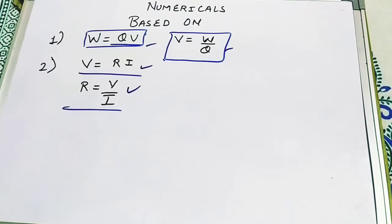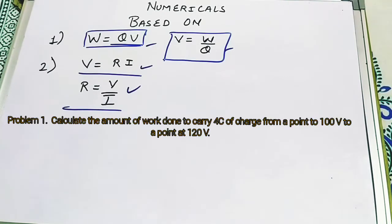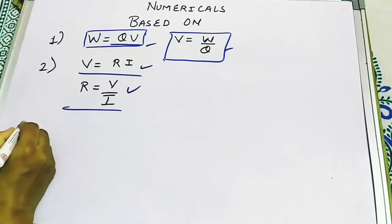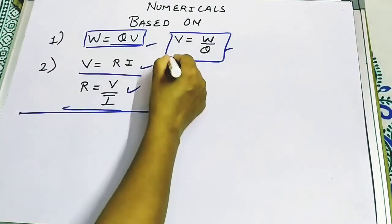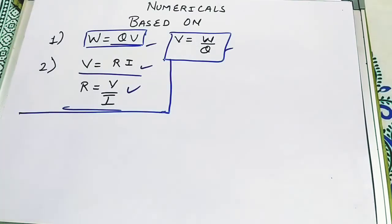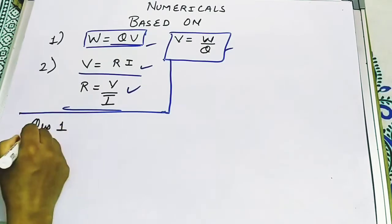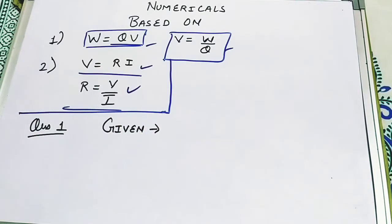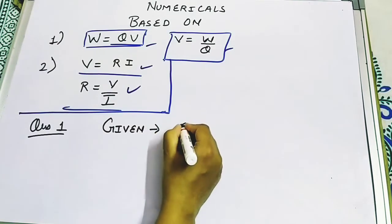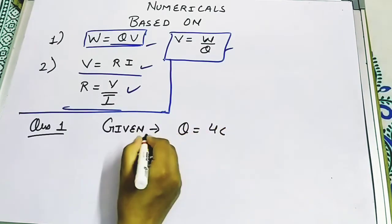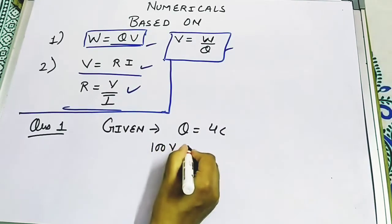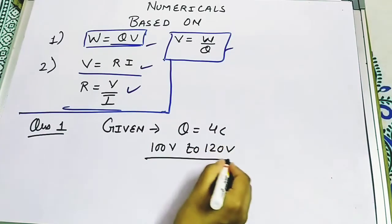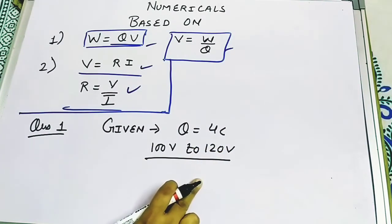In the given problem, calculate the amount of work done to carry 4 coulombs of charge from a point at 100 volt to 120 volt. They have given us a charge of 4 coulombs, and that charge we have to carry from 100 volt to a point of 120 volt. They have given us 2 values of volts, which means they are talking about potential difference.